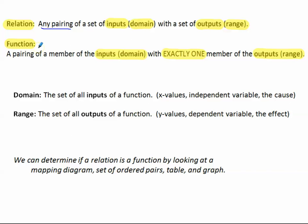So a function is a more specific type of pairing. The domain means the set of all inputs of a function — we can call it the x values, the independent variable, or the cause in a situation. The range is the set of all outputs of a function, also called the y values or the dependent variable, and in a situation it will be the effect.